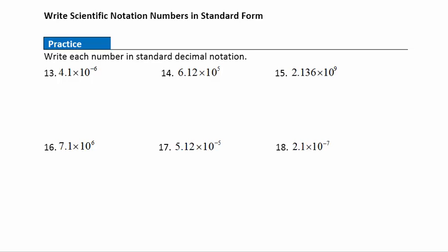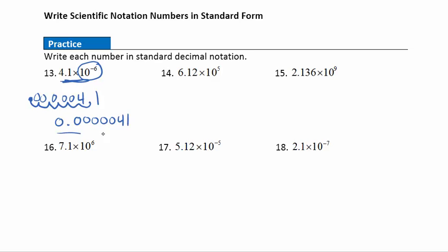Now converting numbers from scientific notation back to standard decimal form. Question 13: 4.1 times 10 to the negative sixth — the negative exponent means moving the decimal six places to the left. Starting at 4.1 and moving six places: one, two, three, four, five, six — filling in zeros gives us 0.0000041.